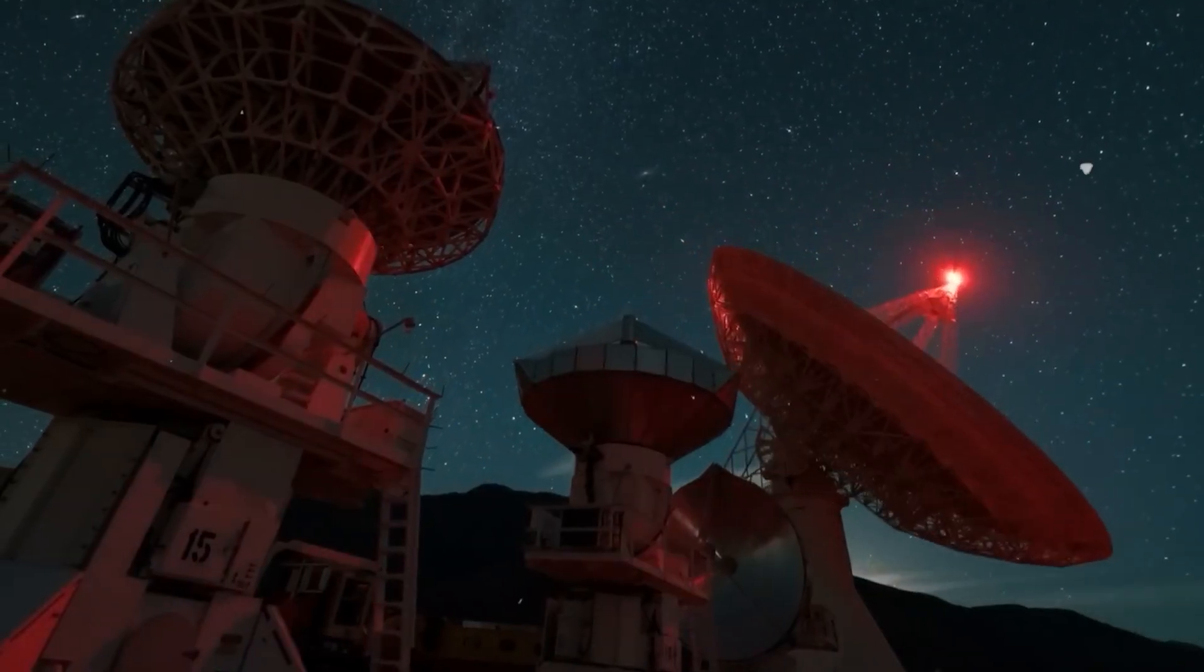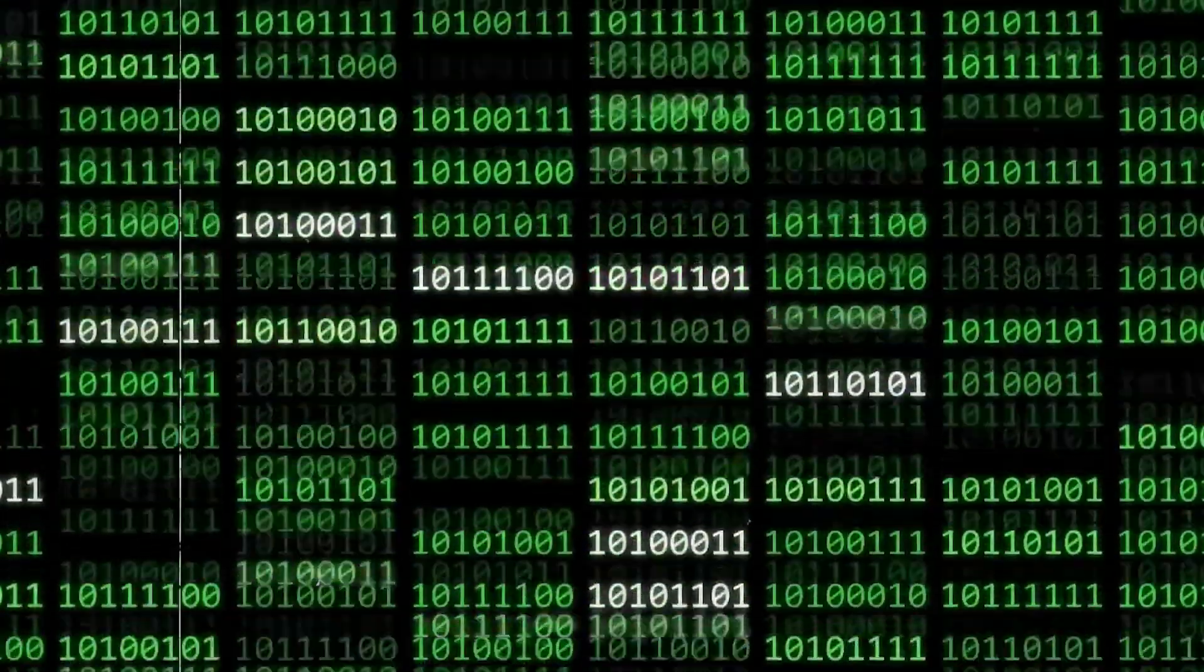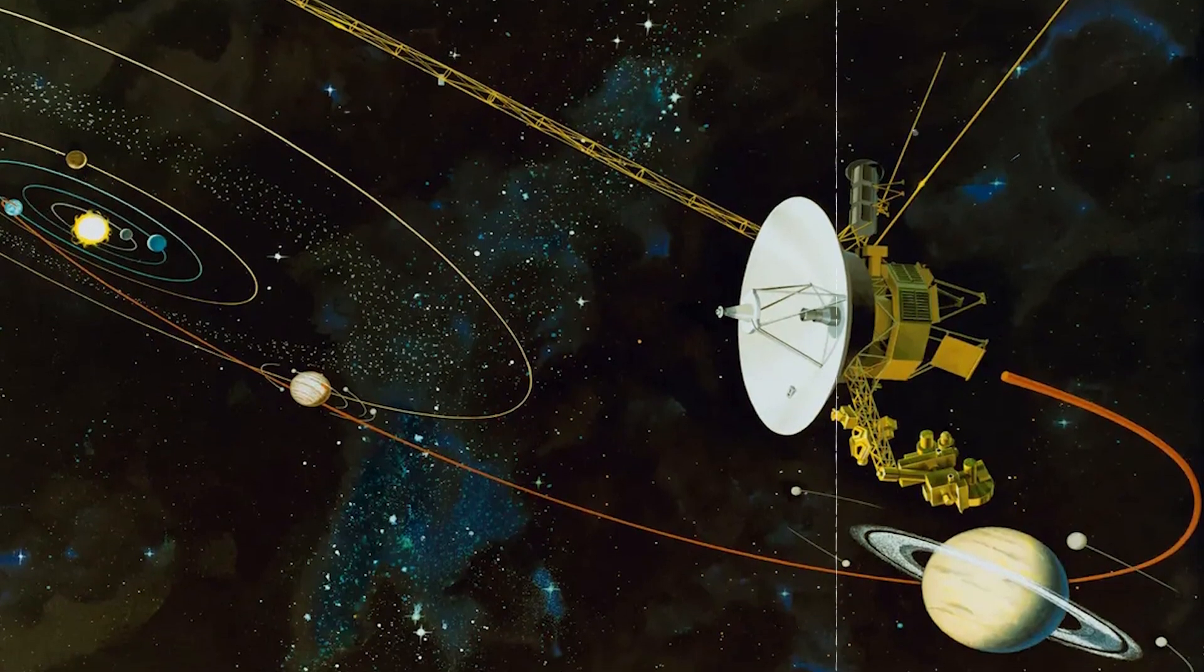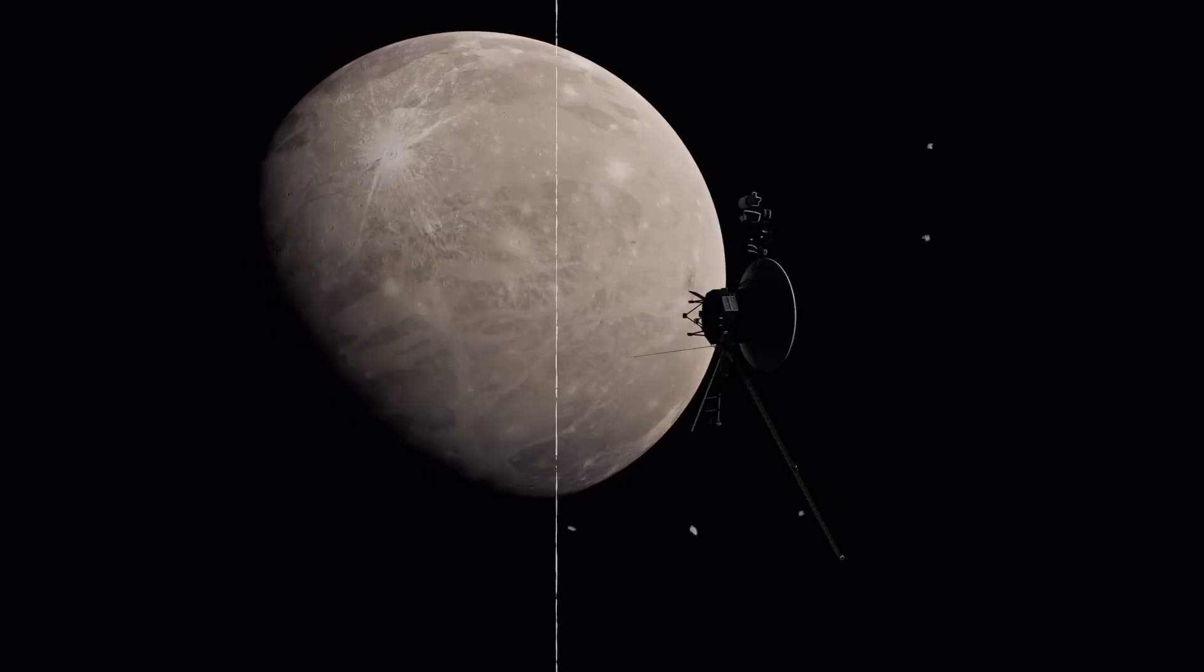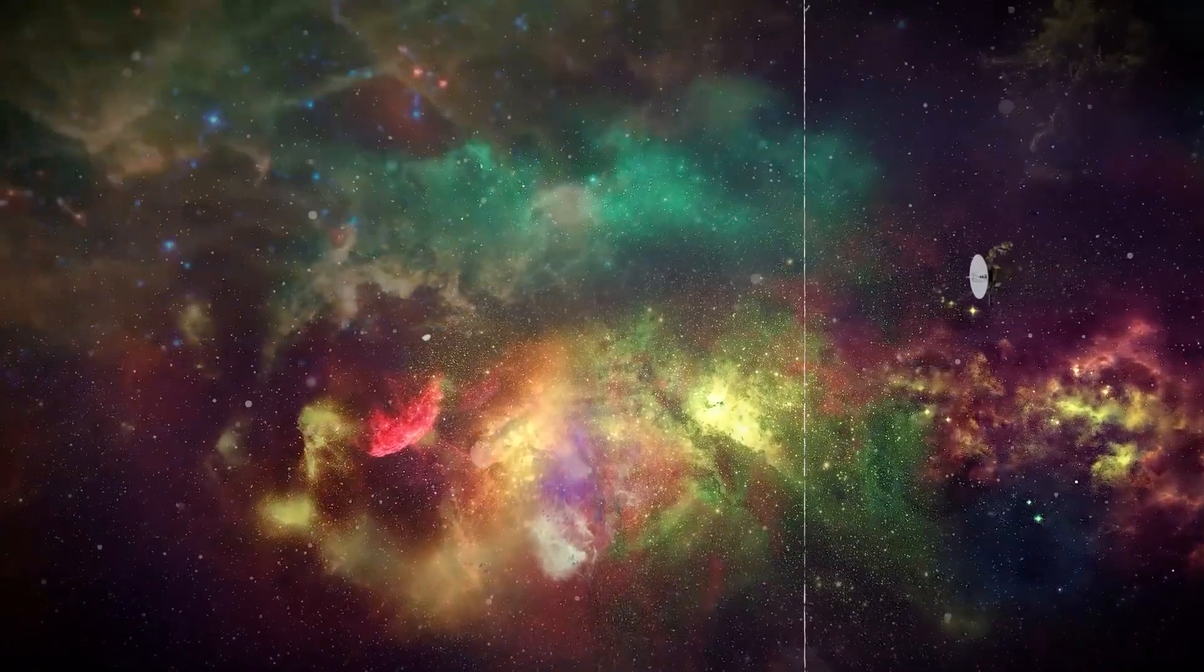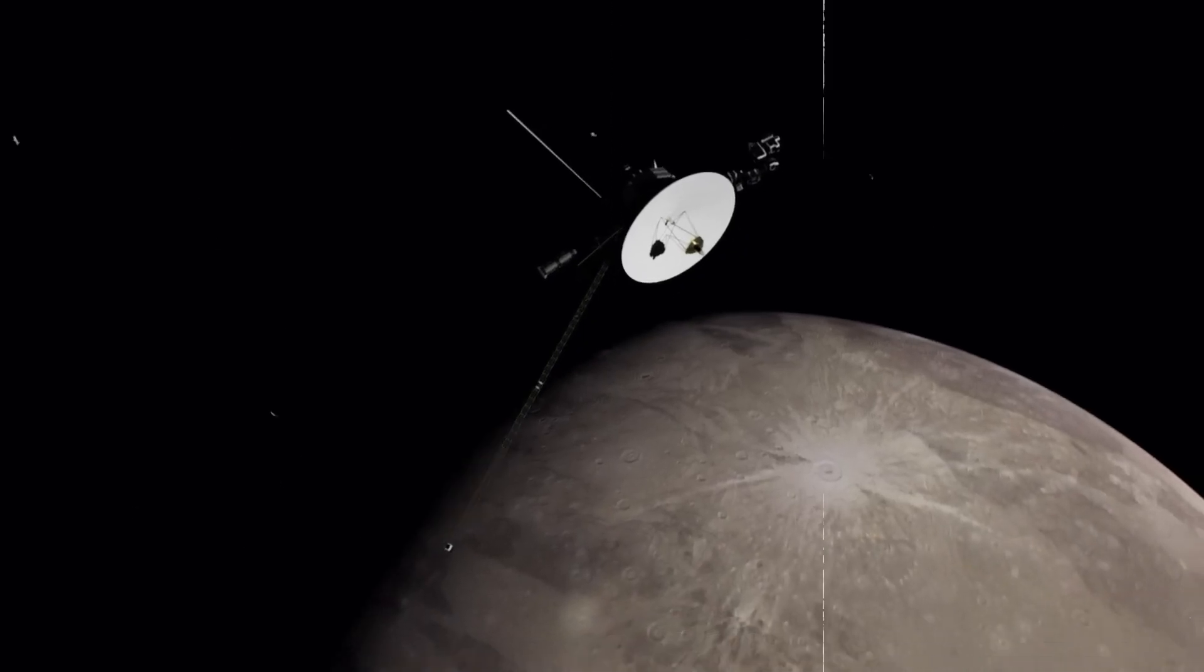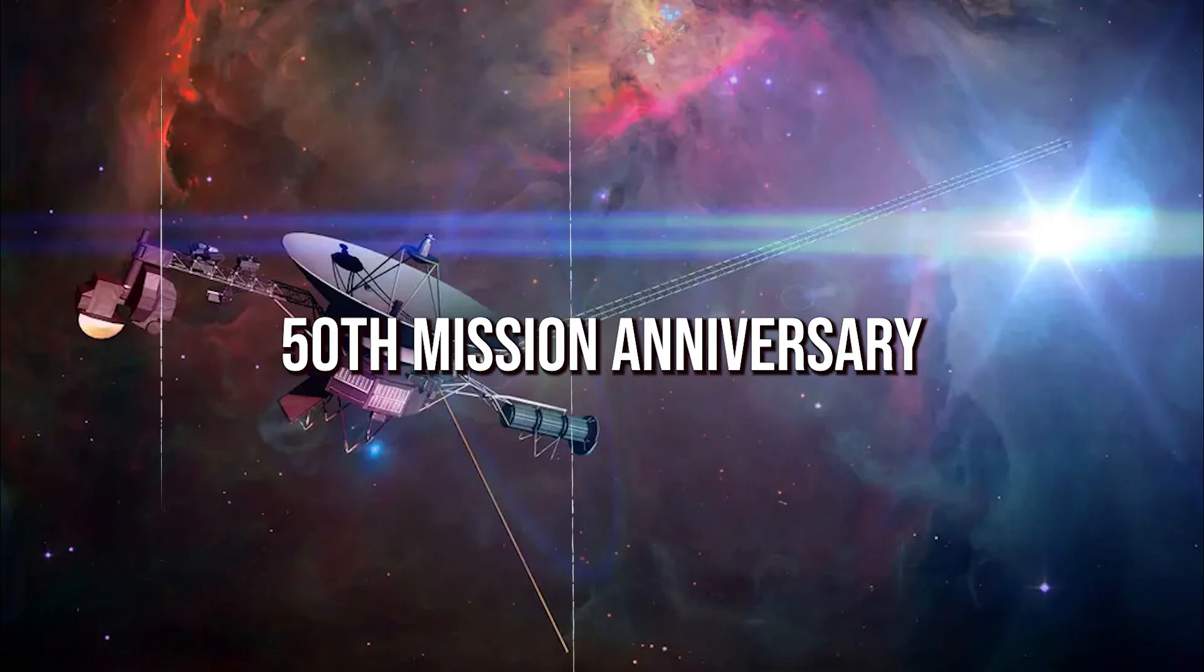It is poised to resume transmitting scientific data once remaining software refinements are complete. As Voyager 1's power diminishes, expected sometime after 2025, it will silently continue its journey through the Milky Way. Alongside Voyager 2, these spacecraft represent humanity's enduring reach into the cosmos, contributing to our understanding of the universe long after their active missions conclude. Scientists remain optimistic that Voyager will transmit scientific data until its 50th mission anniversary.